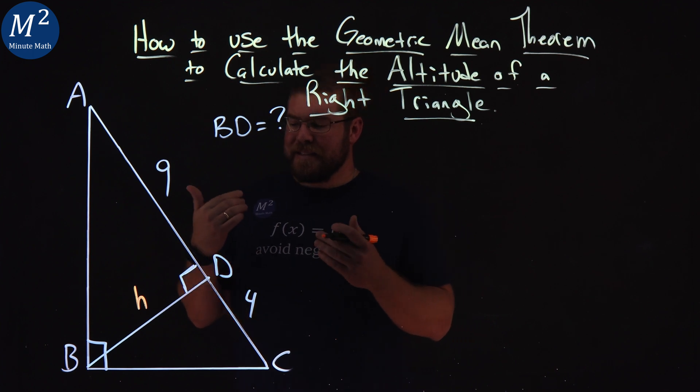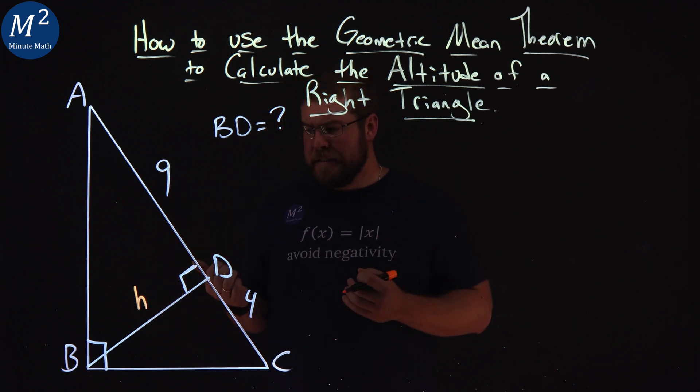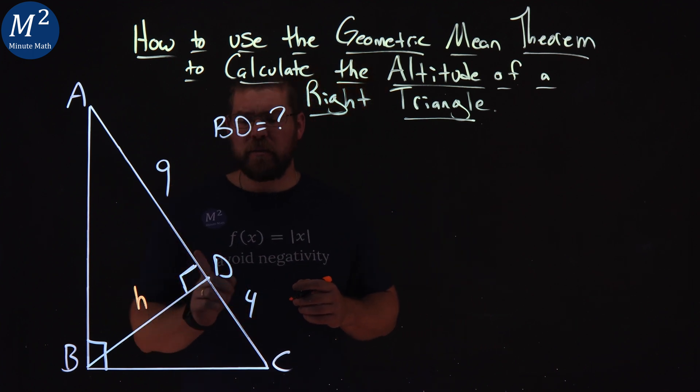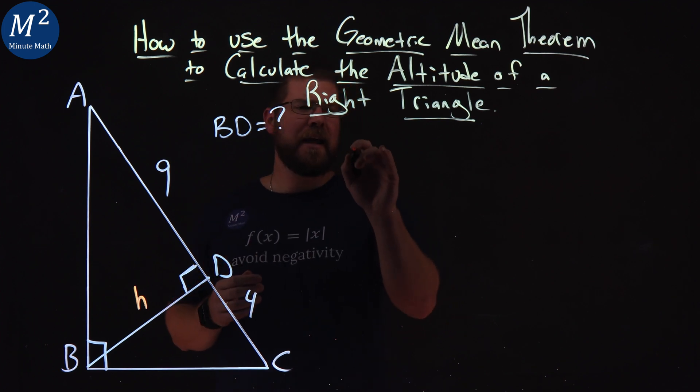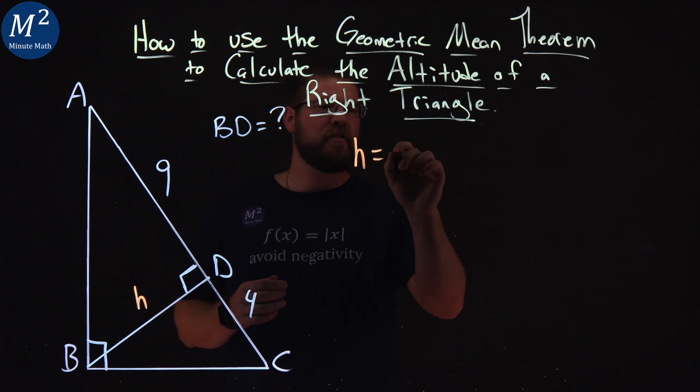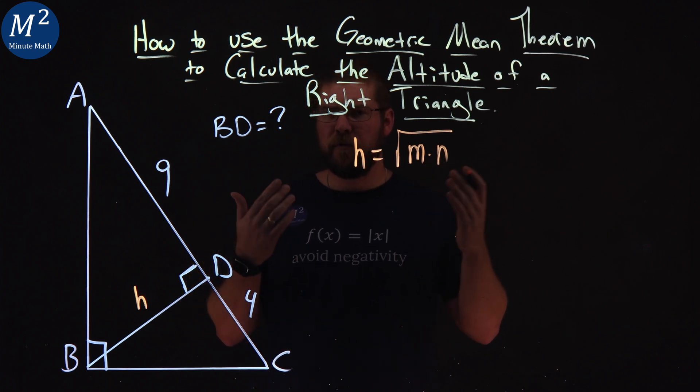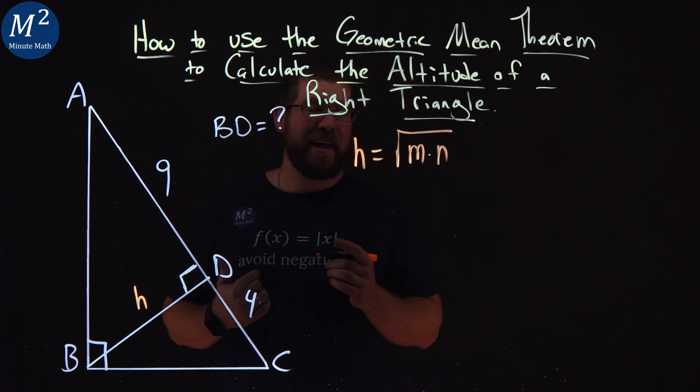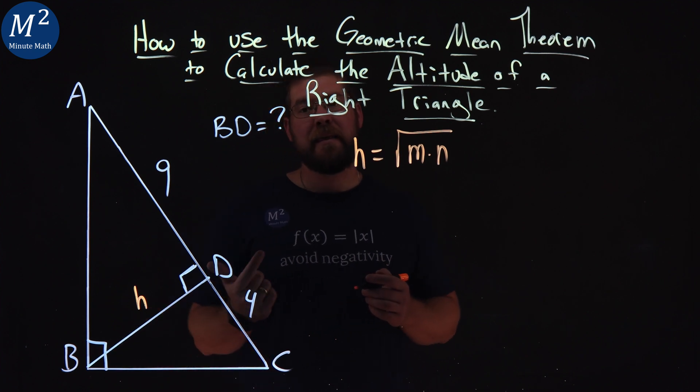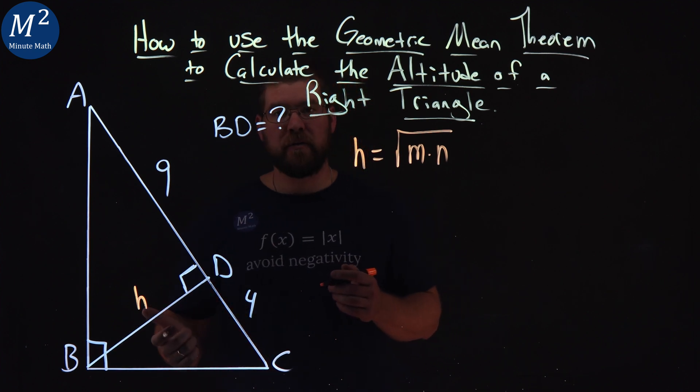All right. So let's go dive on in here. Our geometric mean theorem tells us if we write it as h equals the square root of m times n. Pretty simple if you have it memorized. m and n are the values that are separated from the altitude and h is our altitude.